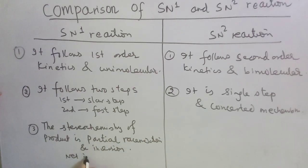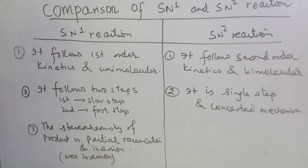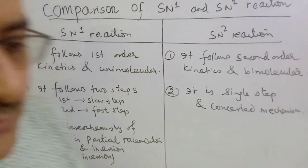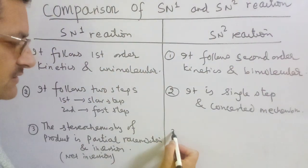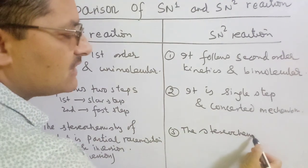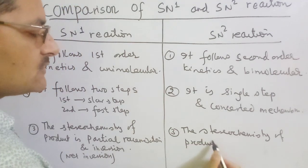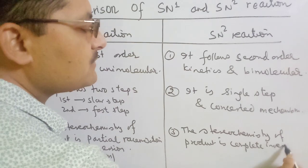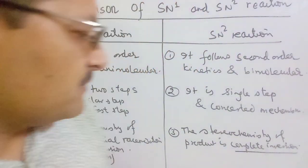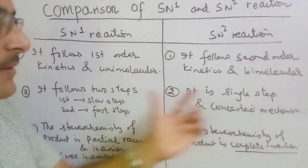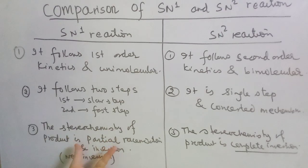In the case of SN1, it is a net inversion. The product is optically active. The stereochemistry of the product is partial racemization plus net inversion. In SN2, the stereochemistry of the product is complete inversion — full backside attack leads to complete inversion, and retention is not possible.